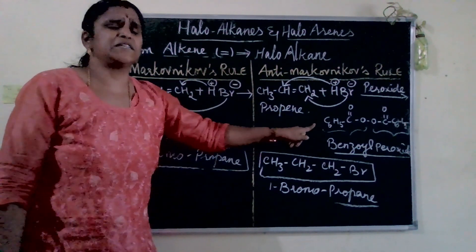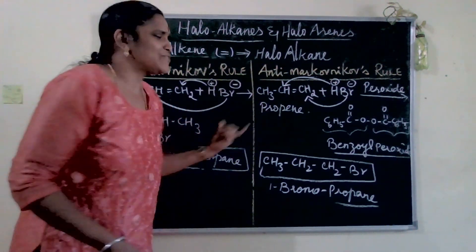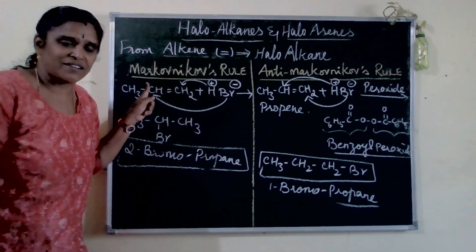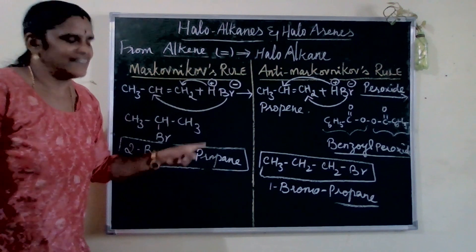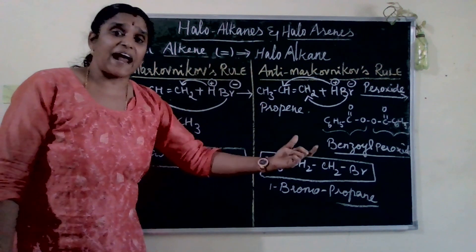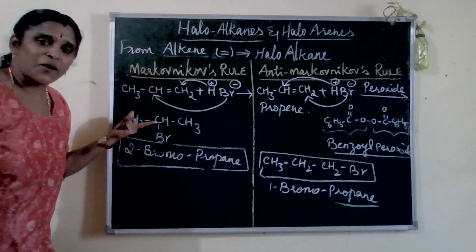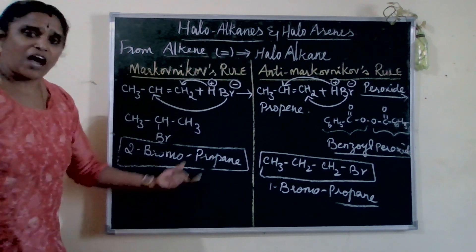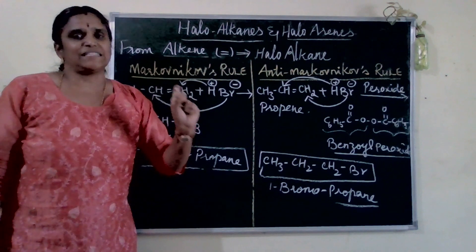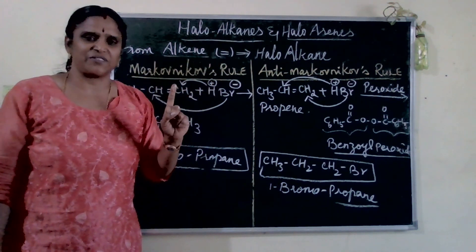We always need a mechanism to understand how this is possible. For Markovnikov's rule, the mechanism involves carbocation formation followed by electrophile attack. For anti-Markovnikov's rule, the mechanism involves free radical formation. Because of the free radical, we get the anti-Markovnikov product; because of the carbocation, we get the Markovnikov product.